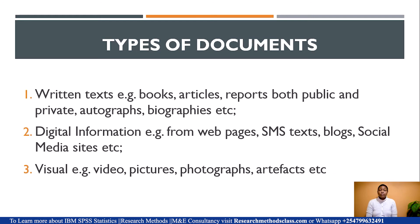Types of documents: We have three types of documents. The first one is written texts, for example, books, articles, reports — both public and private — autographs, biographies, etc. Then we have digital information, for instance from web pages, short message texts, blogs, social media sites, etc. And we also have visual documents, for example, videos, pictures, photographs, artifacts, etc.